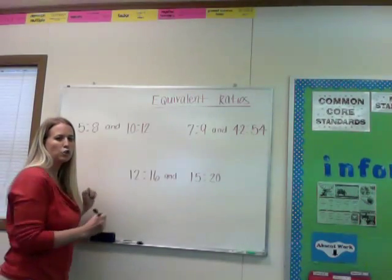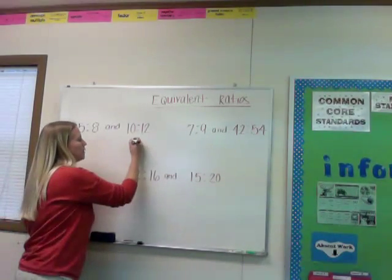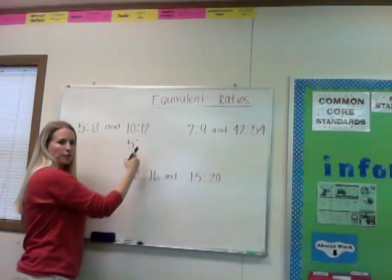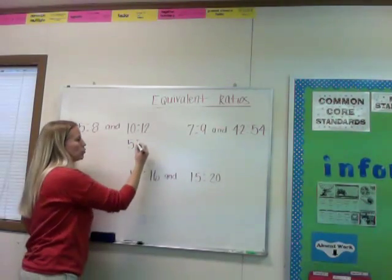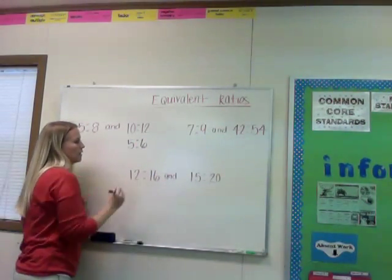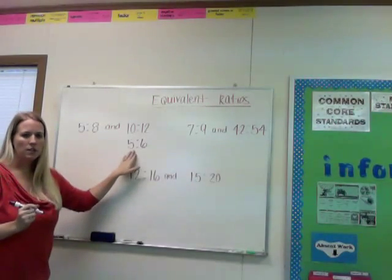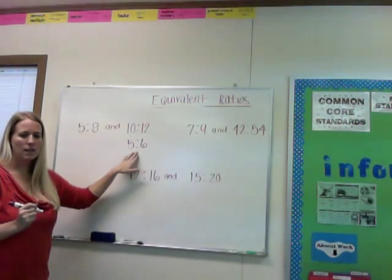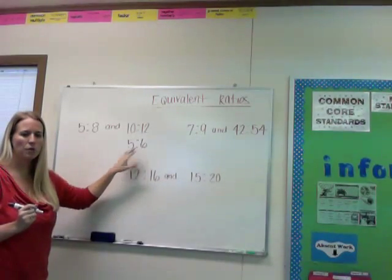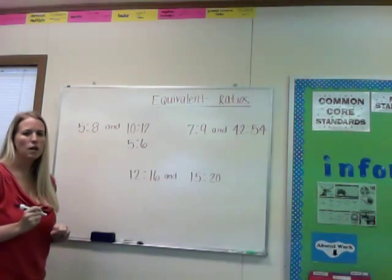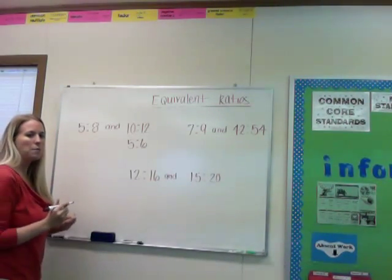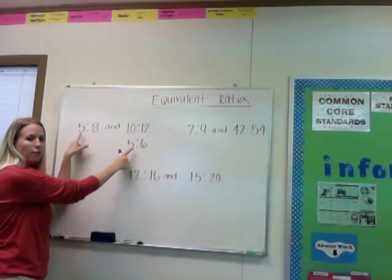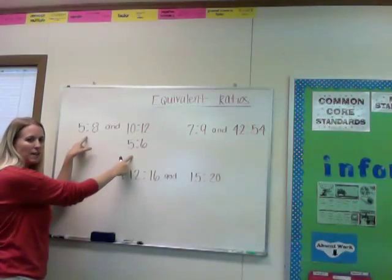10 divided by 2 is 5, and 12 divided by 2 is 6. Then I'll ask myself again, is there a number that can go into both 5 and 6? There's no number that can go into both 5 and 6, so it's in its simplest form. I'm then going to compare these two ratios, and they have to look absolutely identical.